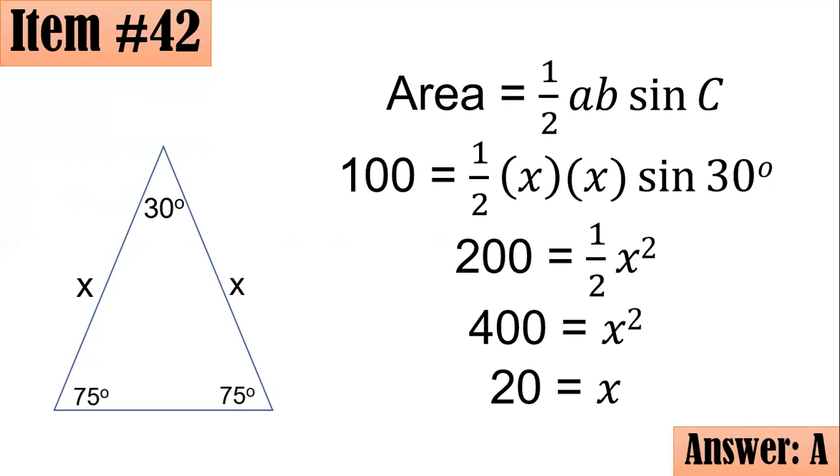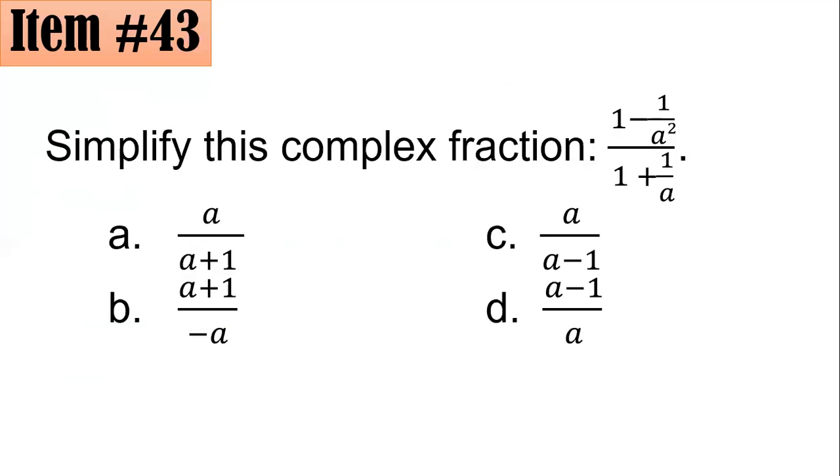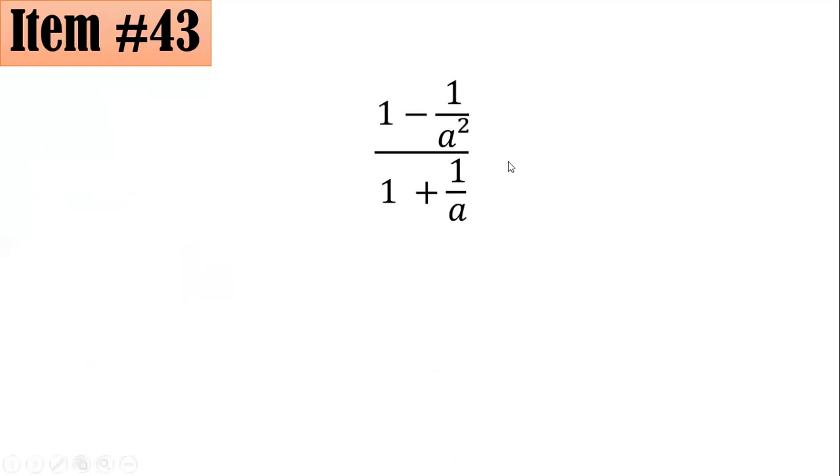Item 43. Simplify this complex fraction: 1 minus 1 over a squared all over 1 plus 1 over a. Did you go with A, B, C, or D? It might not be too apparent, but if you could see with our numerator, this is in fact a difference of two squares.